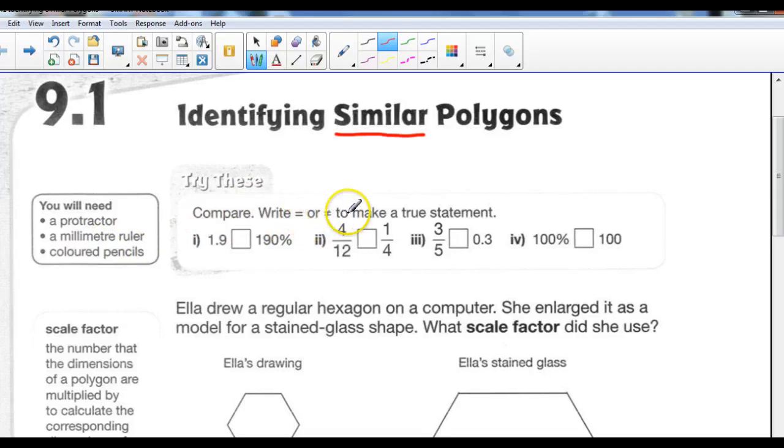Compare. Write equal to or not equal to to make a true statement. Well, 1.9 is equal to 190%. The word percent means out of 100. So if I divide 190 divided by 100, I do get the answer of 1.9. So we can say that 1.9 is the same as 190%. The ratio 4 over 12, well, we've simplified the fraction 4 over 12. What number goes equally into 4 and 12? The answer's 3. So this becomes 1 third. Is 1 third the same as 1 quarter? No, it's not. It's larger, so that's not equal to.